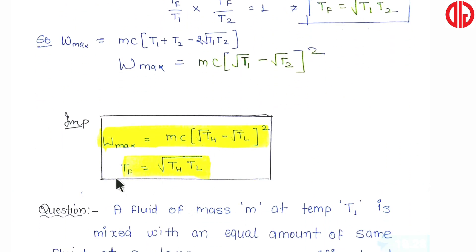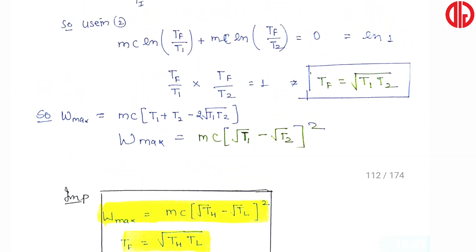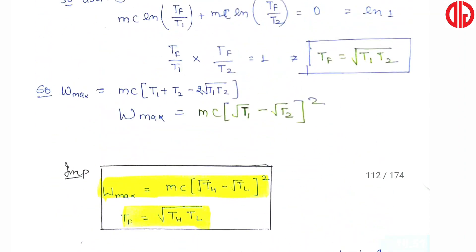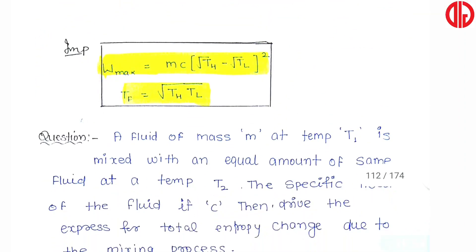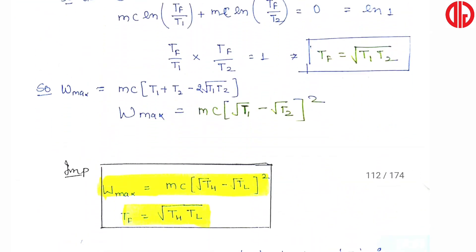So the maximum work formula is Wmax = MC(√T1 − √T2)², and the final temperature is Tf = √(T1·T2). This is a very standard problem. We have derived both the maximum work and the final temperature using entropy principles and energy conservation. Remaining questions will be discussed in the next video. Thank you so much for watching.